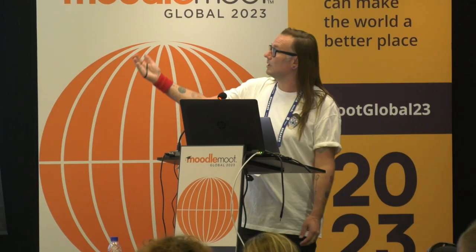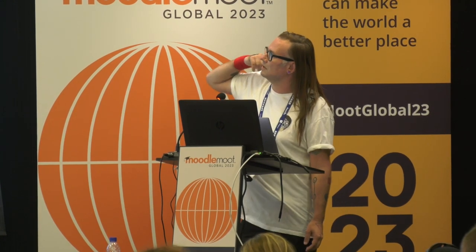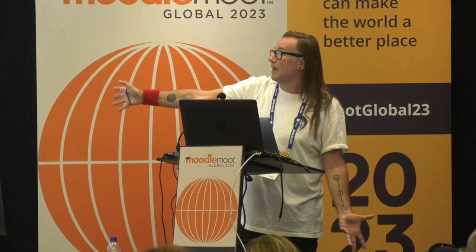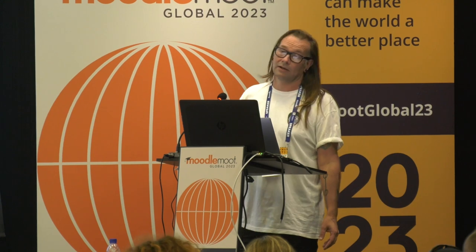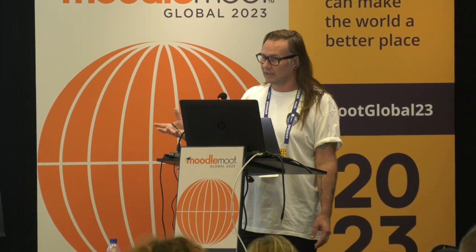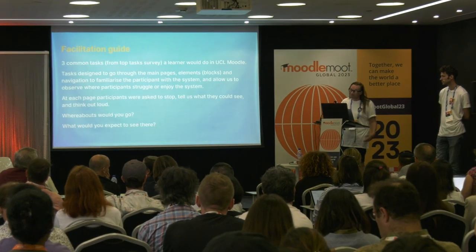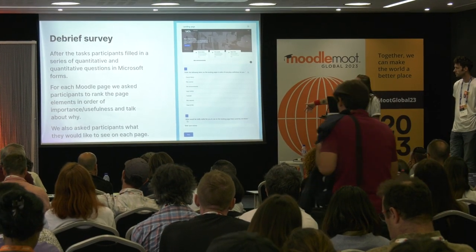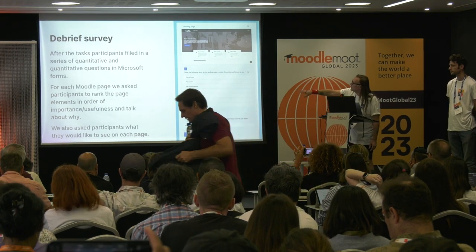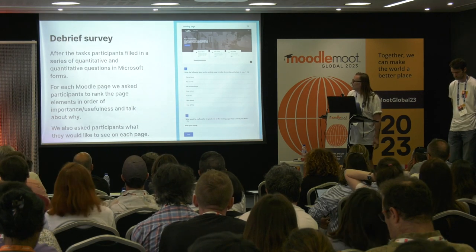We had a facilitation guide and asked participants three common tasks from the top task survey. Tasks were designed to go through main page elements. On each page, participants were asked to stop and think out loud — whereabouts would you go without clicking? What would you expect to see? Then we asked them to click and tell us what they could see and whether it matched expectations. We also did a debrief survey in Microsoft Forms, asking them to rank elements by importance and what else they'd like to see.